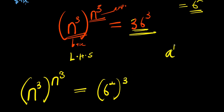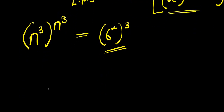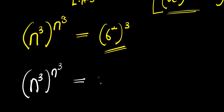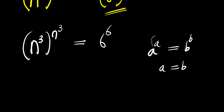Now if you have a to the power of n, raised to the power of n, equals a to the power of n times n. Applying that identity here, we get n power 3, raised to the power of n power 3, equals 6 raised to the power of 3 times 3 — that is 6. So n power 3 raised to the power of n power 3 equals 6 power 6.